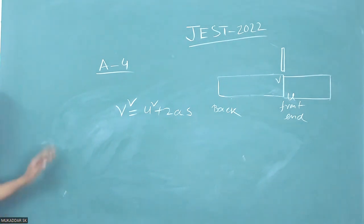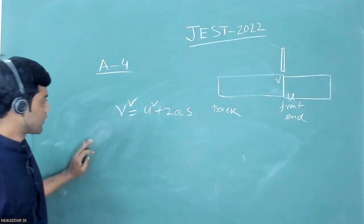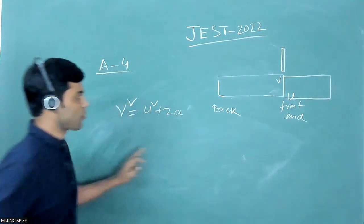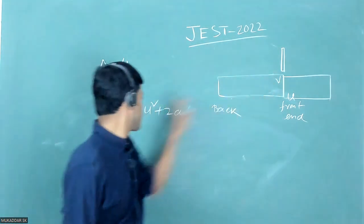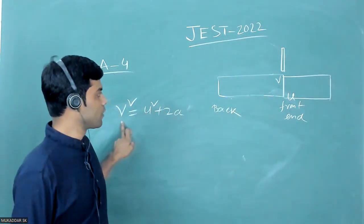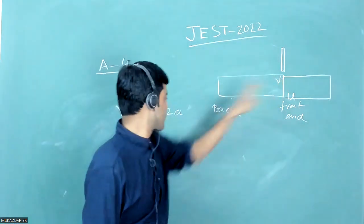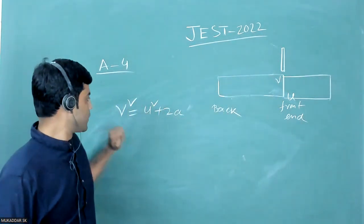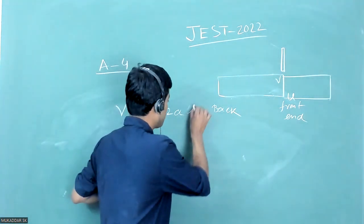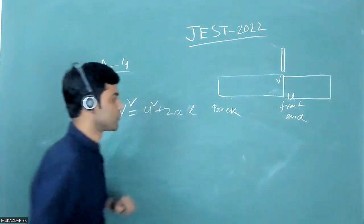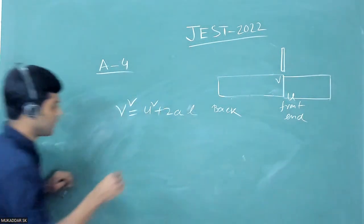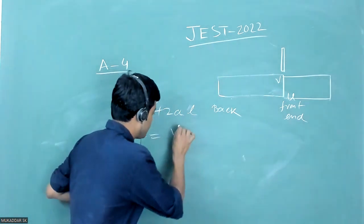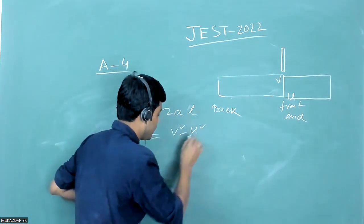Applying this logic: the back end has speed v and the train has length L, moving with constant acceleration a. So v² = u² + 2aL. From this, I get that the acceleration a equals (v² − u²) divided by 2L.